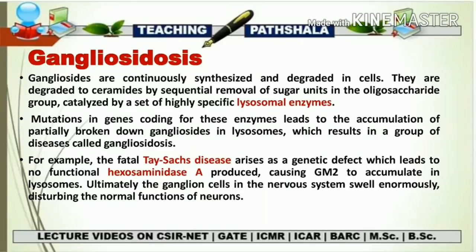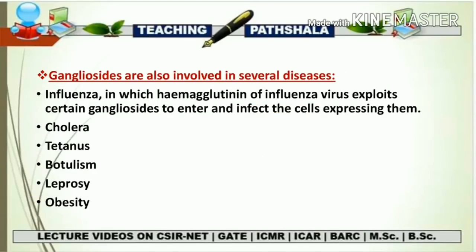As an example, the fatal disease known as Tay-Sachs disease arises as a genetic defect leading to no functional Hexosaminidase A being produced. This causes GM2, a type of gangliosides, to accumulate in lysosomes. There is absence of breakdown of GM2, resulting in a condition in which ganglion cells in the nervous system swell enormously and disturb the normal functioning of neurons. The enzyme involved in this process is Hexosaminidase A, responsible for the breakdown of GM2 gangliosides. In Tay-Sachs disease, Hexosaminidase A is non-functional or mutated, leading to absence of GM2 breakdown and affecting the normal functioning of neurons. Gangliosides are also involved in many different diseases like influenza, cholera, tetanus, botulism, leprosy, and obesity.